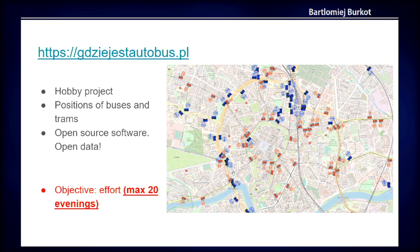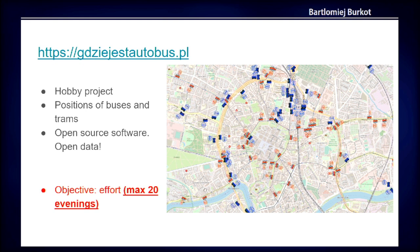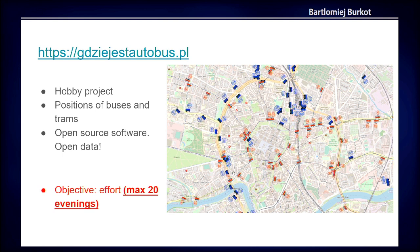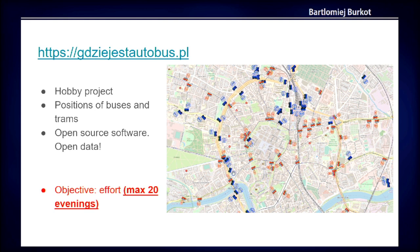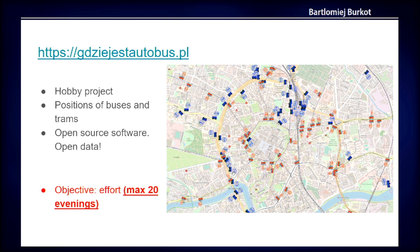This is my hobby project which I developed after my working hours. It shows the positions of buses and trams live, and it uses only open software and open data. When I found the interesting data — the API with the locations — I decided that I would create such a portal because there is useful information in it.